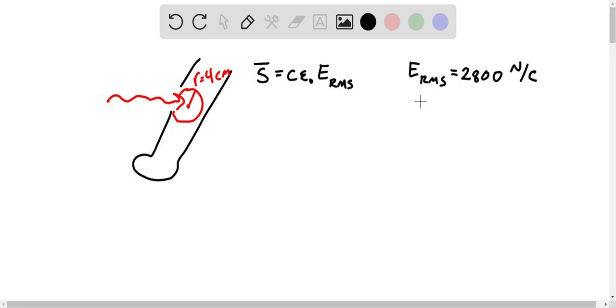And we know what C and epsilon naught are. Those are our constants, C being the speed of light. And epsilon naught is the permittivity of free space, or the vacuum permittivity: 8.85 times 10 to the minus 12. That's units of coulomb squared per newton meter squared.